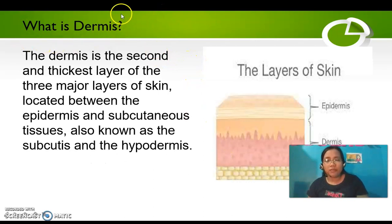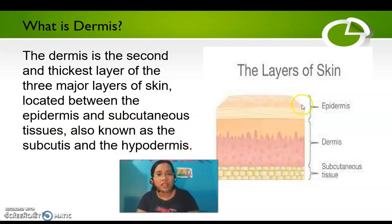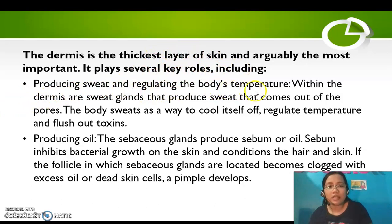What is the dermis? The dermis is the second and thickest layer of the three major layers of skin, located between the epidermis and subcutaneous tissues, also known as the hypodermis. The dermis is the thickest layer and arguably the most important. It plays several key roles, including producing sweat and regulating the body's temperature. Sweat glands within the dermis produce sweat that exits through the pores to cool the body off, regulate temperature, and flush out toxins.